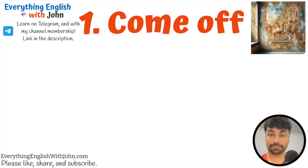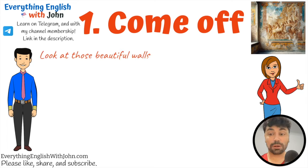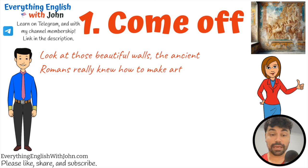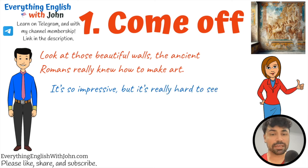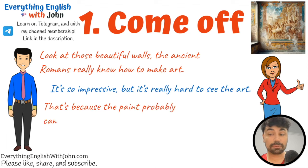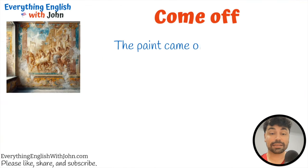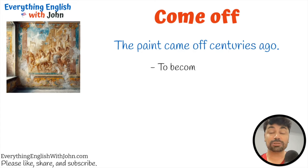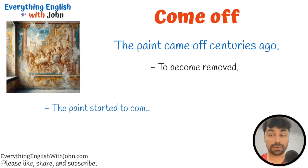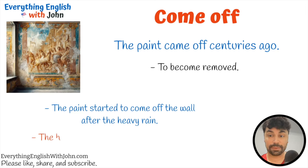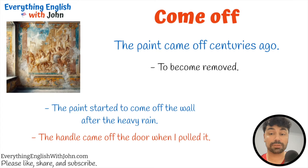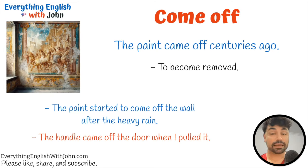Number one: come off. Look at those beautiful walls. The ancient Romans really knew how to make art. It's so impressive, but it's really hard to see the art. That's because the paint probably came off centuries ago. We're still lucky that we have what we have after so much time. To become removed. The paint started to come off the wall after the heavy rain. The handle came off the door when I pulled it. Off in this verb means no contact — the paint was on the wall before, but now it's off. It came off the wall.